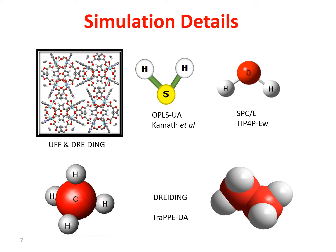TRAP-UA force field was also used to model ethane, and the results were compared with our previous work where we used the Dreiding model for ethane. The difference between these force fields for ethane is also only in epsilon: for Dreiding it is 125.8 K, and for TRAP-UA it is 98 K. The Kamath force field was used to represent hydrogen sulfide. Such a model has been successfully used to reproduce the experimental vapor-liquid phase equilibrium data and has been validated in other previous studies. Simulations were also performed with the OPLS-UA force field. TIP4P/2005 force field was used to model water molecules, and simulations were also carried out with the SPC/E force field.